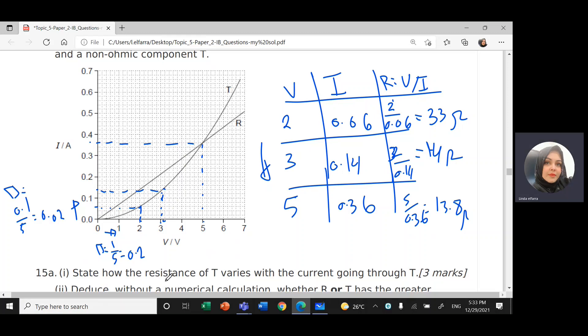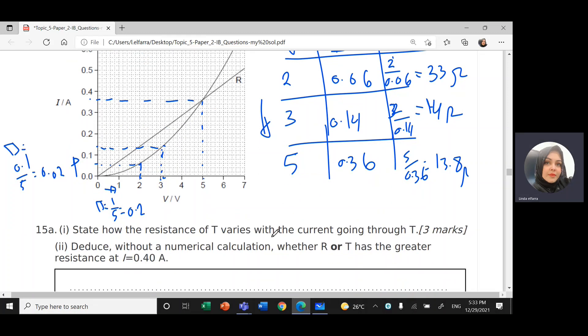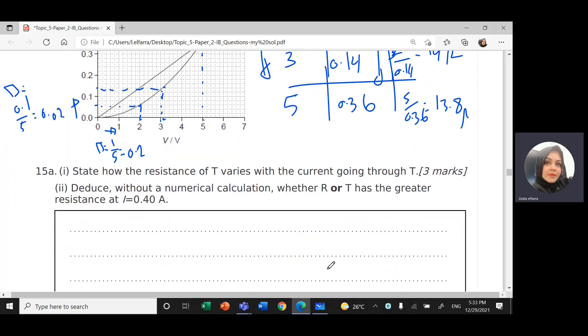So the first one, how resistance varies with the current. Similarly, as I increase the current, the resistance will decrease. So this is part I. R for resistance T decreases with increasing the current, with increasing the current.